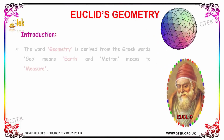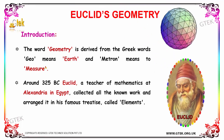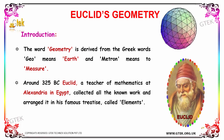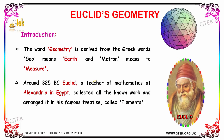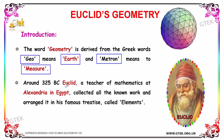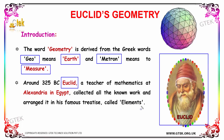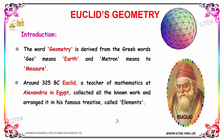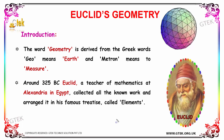Let's go with the introduction part of Euclid's Geometry. You can see a person named Euclid. The word geometry is derived from the Greek words 'Geo,' which means Earth, and 'Metron,' which means measure. Around 325 BC, Euclid, who was the teacher of mathematics at Alexandria in Egypt, collected all the known work and arranged it in his famous treatise called Elements.